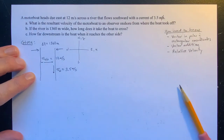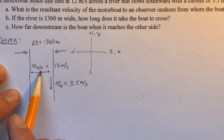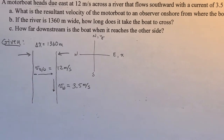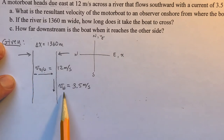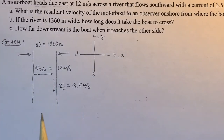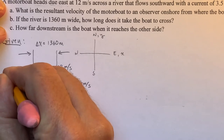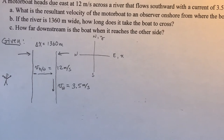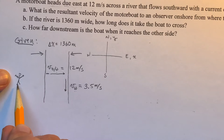Now let me explain this notation. 'b/w' — b-slash-w — is how I express a relative velocity. This is the velocity of the boat compared to the water. The velocity labeled just 'w' with no slash is the velocity of the water compared to an observer on shore who is not moving. So that's the velocity of the water compared to our non-moving reference frame.